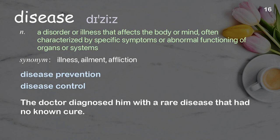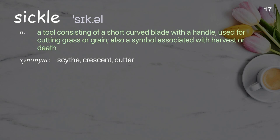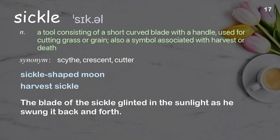Sickle: a tool consisting of a short curved blade with a handle, used for cutting grass or grain; also a symbol associated with harvest or death. Examples: sickle-shaped moon, harvest sickle. The blade of the sickle glinted in the sunlight as he swung it back and forth.